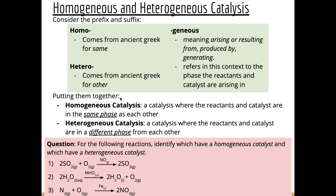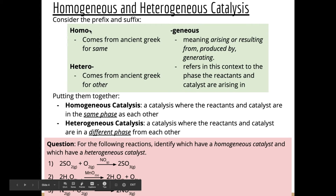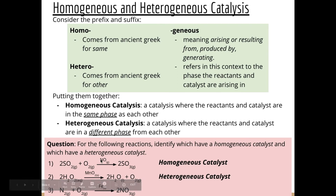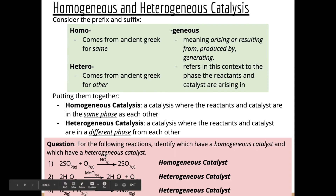For the following reactions, identify which have a homogeneous catalyst — where the catalyst is in the same phase as the reactants — and which have a heterogeneous catalyst. First: a gaseous catalyst with two gaseous reactants — they're the same phase, so it's homogeneous. Second: a solid catalyst with an aqueous reactant — different phases, so heterogeneous. Third: a solid catalyst with two gaseous reactants — different phases, also heterogeneous. Homogeneous and heterogeneous catalysis simply refers to whether the catalyst and reactants are in the same phase or not.